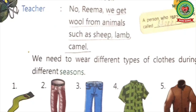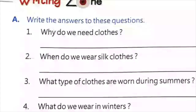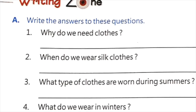Today I have read page 40. Now I am going to discuss the back exercise that you will do as homework. Exercise A on page 44: write the answers to these questions. Question number one: why do we need clothes? Question number three: what type of clothes are worn during summers? Question number four: what do we wear in winters? Your homework is to read page 40 again and do and revise Exercise A, questions one, three, and four in your book.